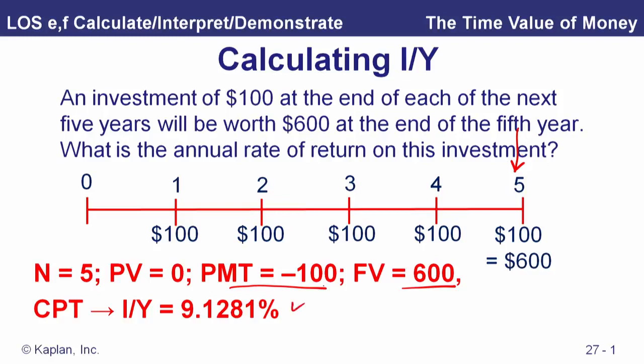So we've now covered all five TVM variables — putting in four of them, you can solve for the other one. Understanding the problem and getting it set up correctly is key, and it often helps to use a timeline, especially when you're first working with these problems. Ask yourself: where are the cash flows, what am I looking for, and which tools will get me there?